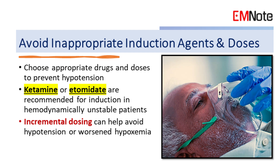Avoid Inappropriate Induction Agents and Doses. Inappropriate induction agents or inappropriate doses can cause or worsen hypotension during induction. Ketamine or etomidate are recommended for induction in hemodynamically unstable patients. Incremental dosing can help avoid hypotension or worsened hypoxemia.